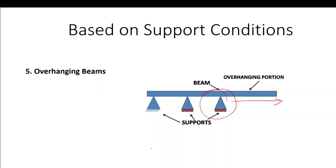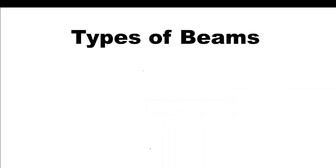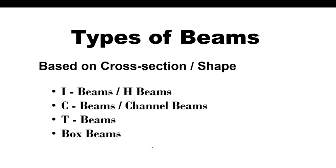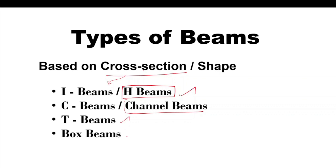The second category in types of beams is beams based on cross-section. The cross-section resembles the type of beam. We have I-beam, also called H-beam, C-beam or channel beam, T-beam, and box beam. These are the four types of beams categorized based on cross-section.